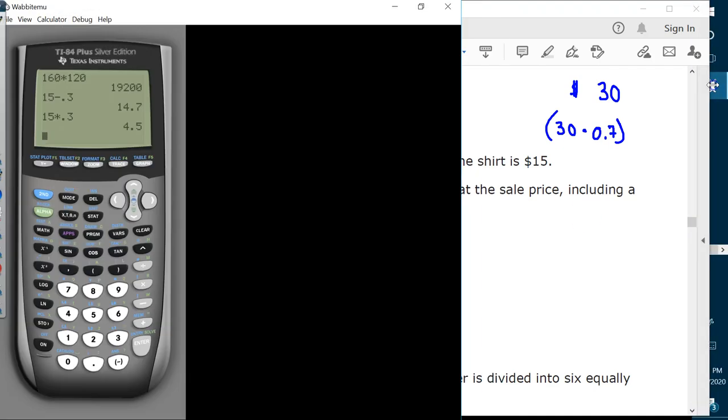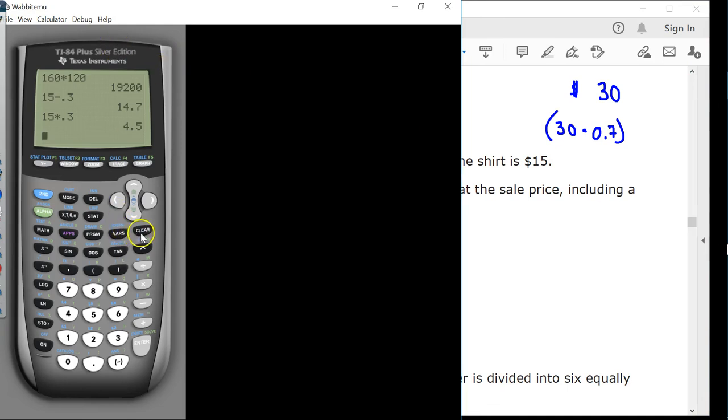That was pretty easy to do in terms of the calculator because this is a calculator allowed section. If you want to do it that way, that's fine. Choose your own adventure. You have access to it. If you want to use it, use it. I'm not here to judge your life. So I do 30 times 0.7 and I get 21.